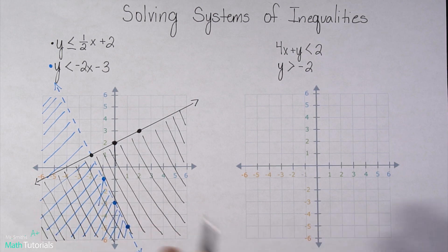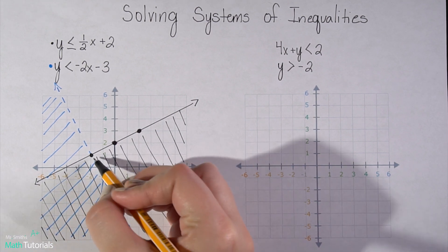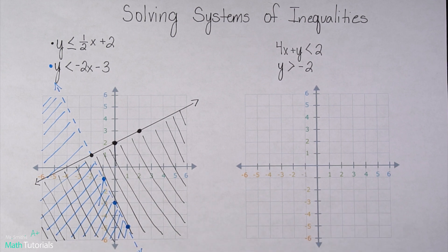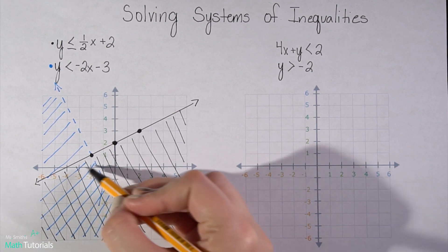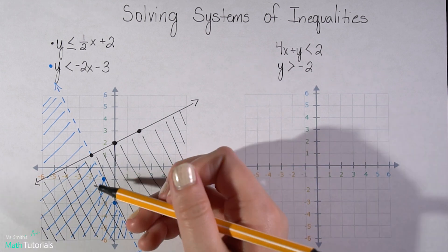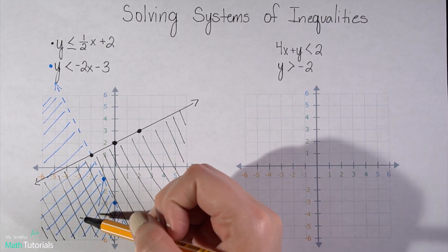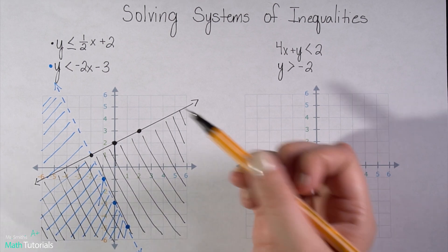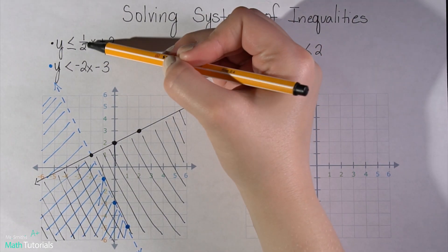So this right here, this section is going to be my solution. So I could pick any point within that section, as well as extended beyond the graph, what would fall in that section. Anything I choose would be a solution that would make these statements true.